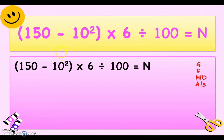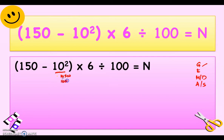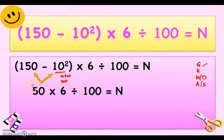Let's rewrite the equation. We have here a grouping — there's a parenthesis — so we perform the operation inside the parenthesis. We have an exponent and subtraction inside, so we perform the exponent first: 10 squared is 10 times 10, which is 100. So we have 150 minus 100, that is 50.